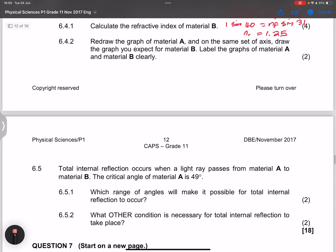Now, let's go on to the next part. They say total internal refraction occurs when a light ray passes through the material A to material B. They say the critical angle of material A is 49 degrees. Now, they say which range of angles will make it possible for total internal refraction. Now, note in this case that because the critical angle is 49, then it means that that angle must definitely be less than 90, but it must be greater than 49. So that is what would cause total internal refraction.